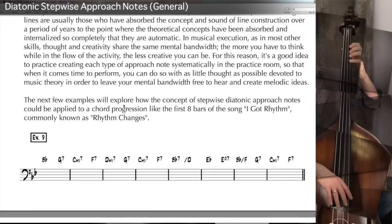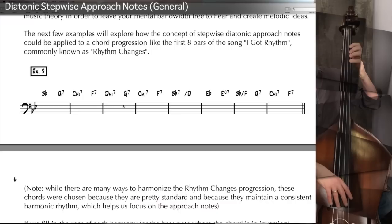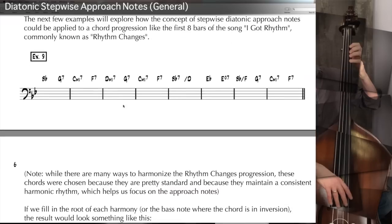The next few examples explore how stepwise diatonic approach notes could be applied to the first eight bars of George Gershwin's 'I Got Rhythm,' commonly known as rhythm changes. The chords chosen — B-flat, G7, C minor, F7, D minor, G7, C minor, F7, B-flat 7, B-flat 7 over D, E-flat, E diminished 7, B-flat over F, G7, C minor, F7 — maintain a consistent harmonic rhythm which helps focus on the approach notes. Example 10 shows just the roots filled in, played as a two-feel, and you'll hear this example twice.